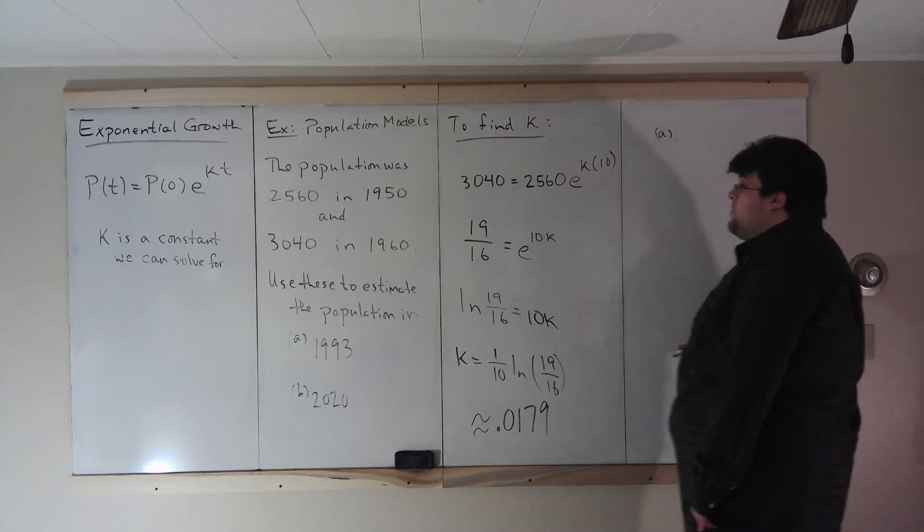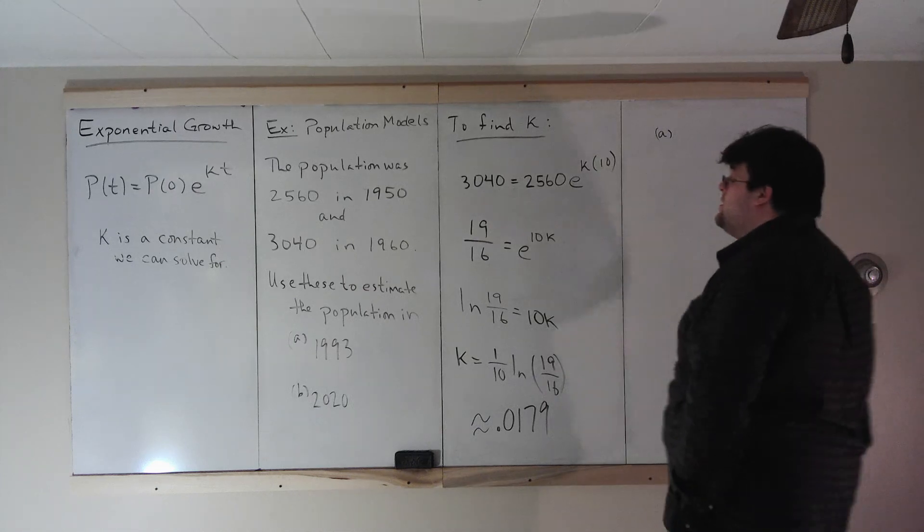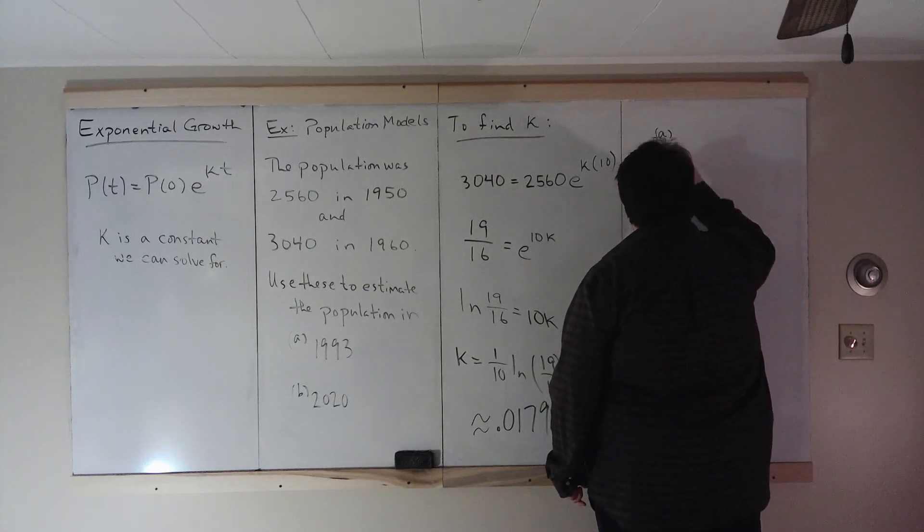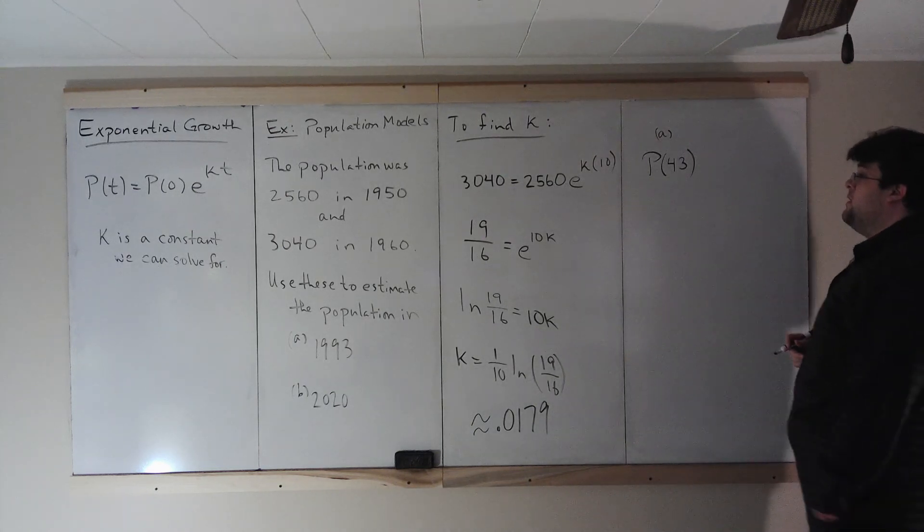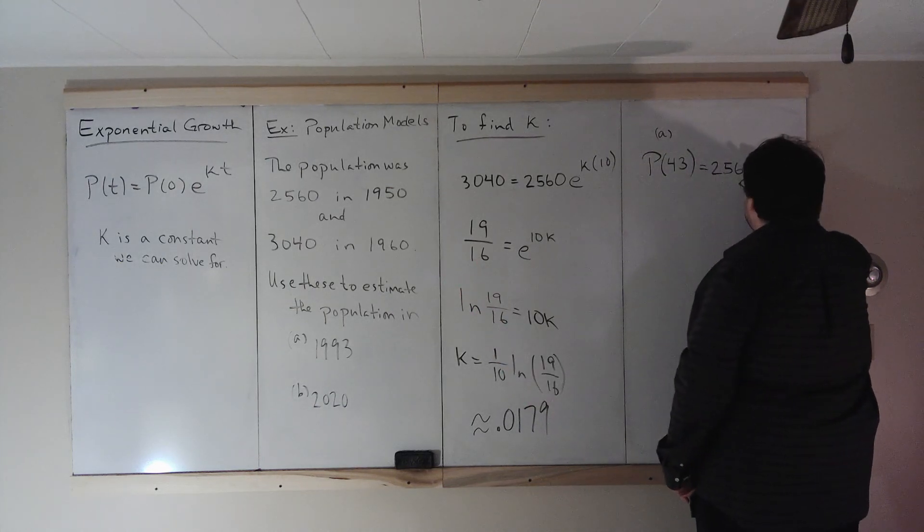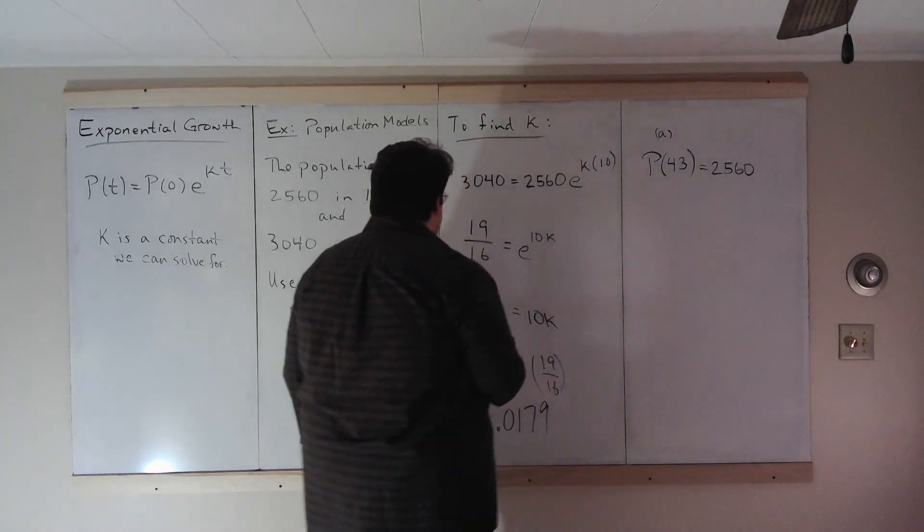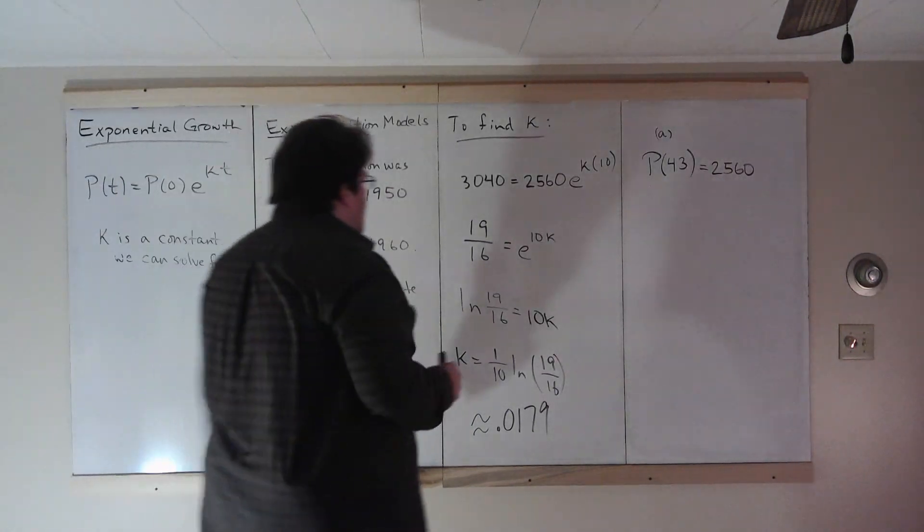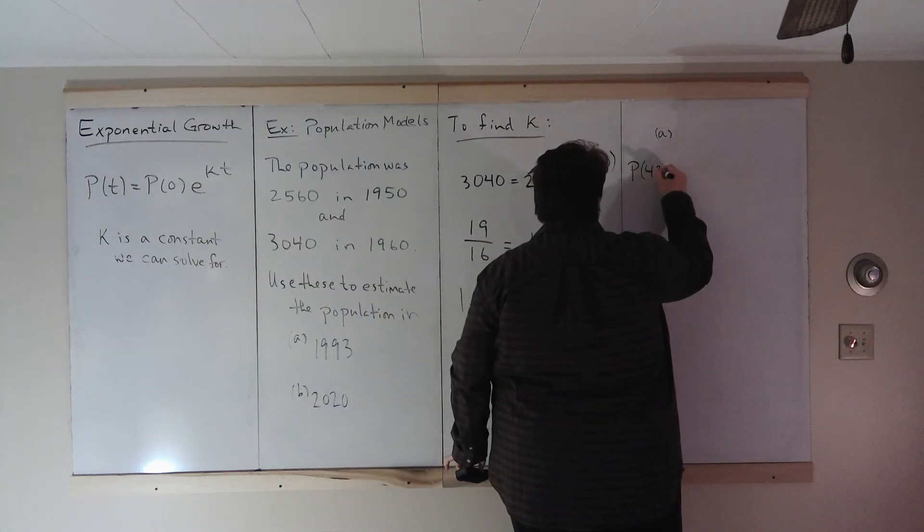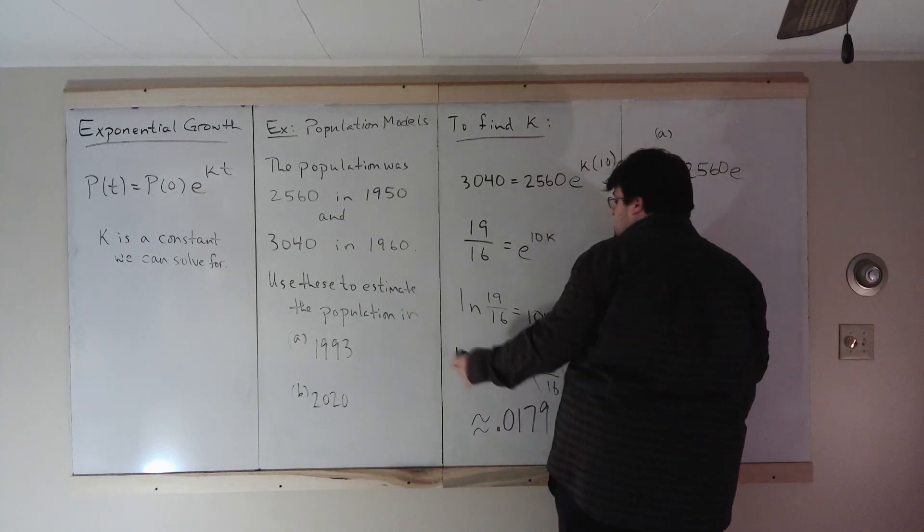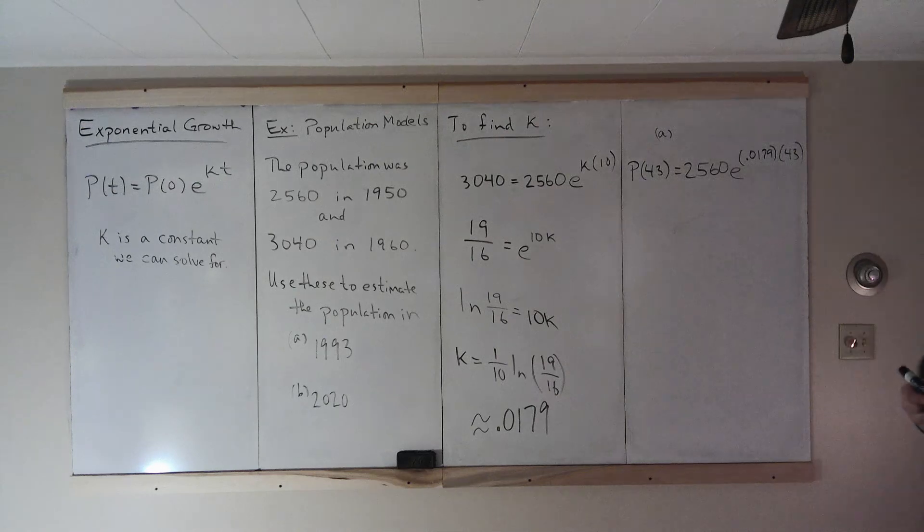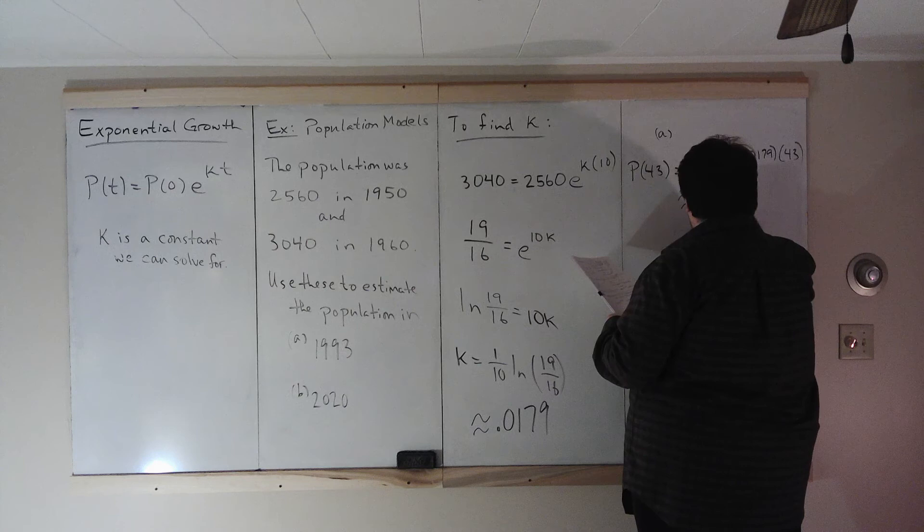In 1993, well, remember, our base year is 1950. 1993 is how much later than 1950? It is 43 years later than 1950. So we need P evaluated at 43. It equals P(0), so 2560 times—I don't have room over here. It's bright out, so there's a glare. I'm trying to avoid that. So P(43) equals 2560 times e to the kt. k is, we'll use the decimal, 0.0179 times t, which is 43, because it's 43 years later. And what does this equal? This is approximately equal to 5360.